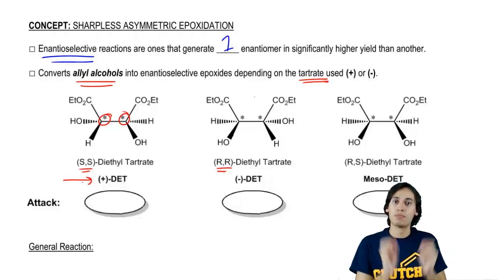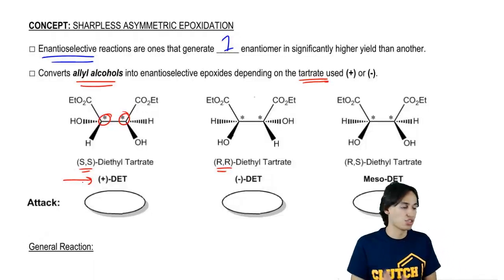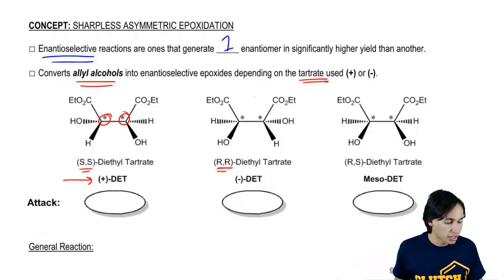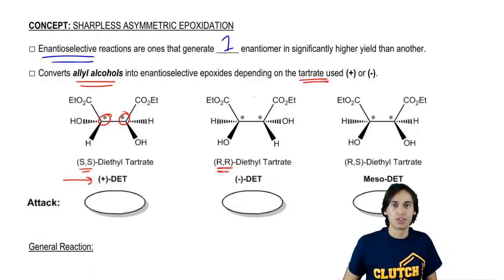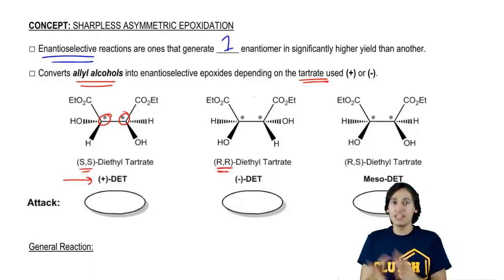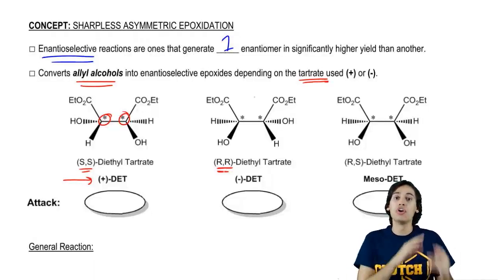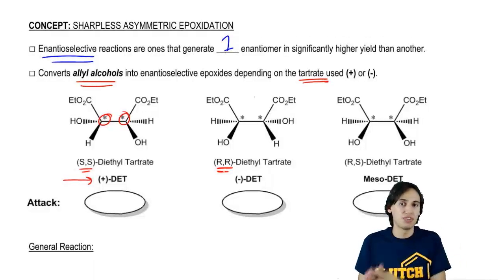The enantiomer of that would mean that both chiral centers are opposite. So if you have an RR tartrate, that's going to be a negative rotation. The reason is because remember that the enantiomer of any chiral center or of any chiral molecule will always have the opposite configuration.